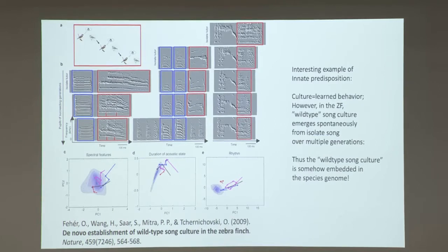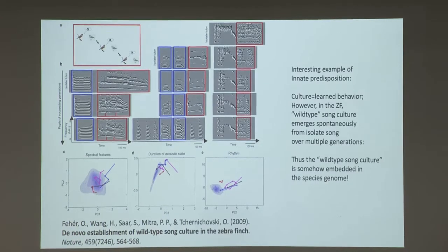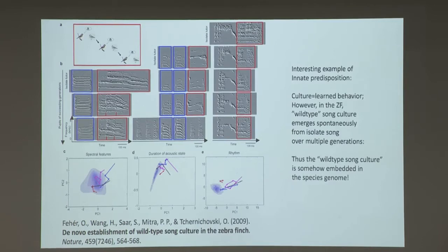Learning is almost not the right way to think about birdsong — I think of it now as development. There is something called an isolate song: songbirds that never heard any songs will develop their own songs because it was there in the genome. If you let isolate birds breed over multiple generations, they evolve song culture, and remarkably that culture turns out to be the wild-type culture found in the forest. Even culture is somehow embedded in the species genome — very strong biological priors.